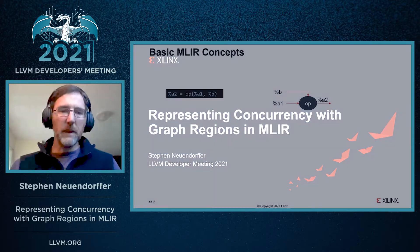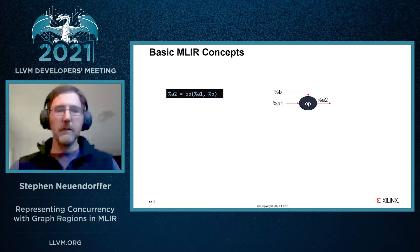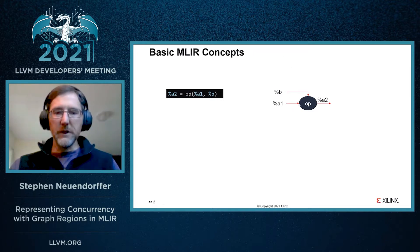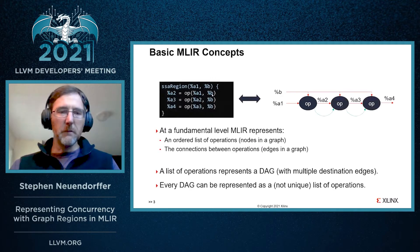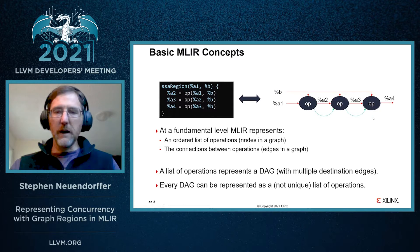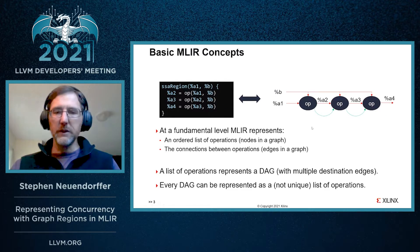In MLIR, fundamentally, we have operations, and each operation is like a node in the graph. Each edge into the operation has a name associated with it so that we can refer to it. When we take multiple operations and combine them into a containing operation, the edges become edges in the graph, and we also have a sequence relation between the operations.